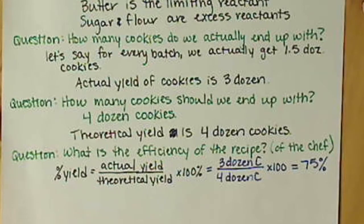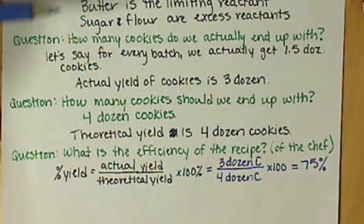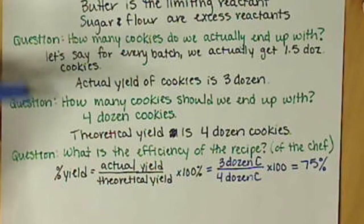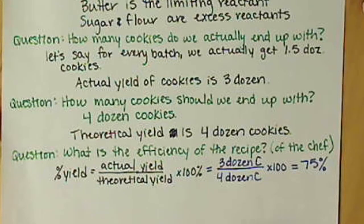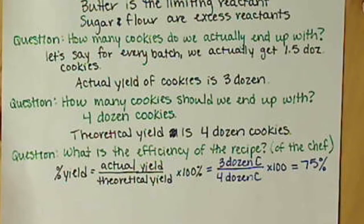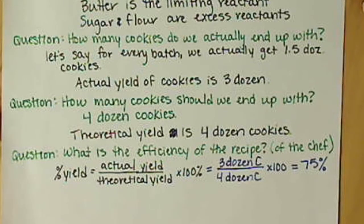That wraps up talking about this in non-chemical terms. In the next video we'll define each of these terms: limiting reactant, excess reactants, actual yield, theoretical yield, and percent yield, and work on a problem looking at limiting reactant. Then we'll look at theoretical yield and percent yield in another video, put them all together in one big example, and the very last video for section 6.8 will show you what I call the mole road, which for visual people may help organize how these calculations work.